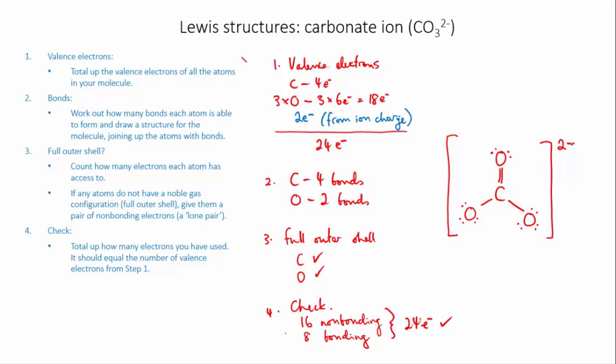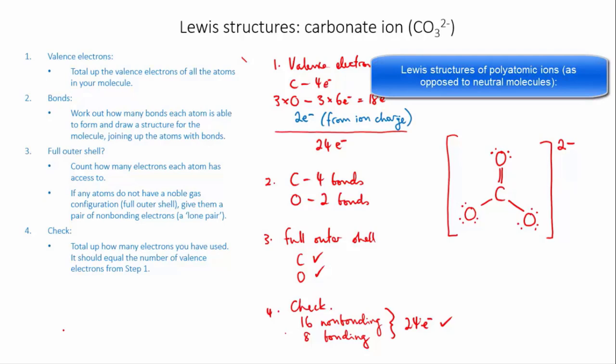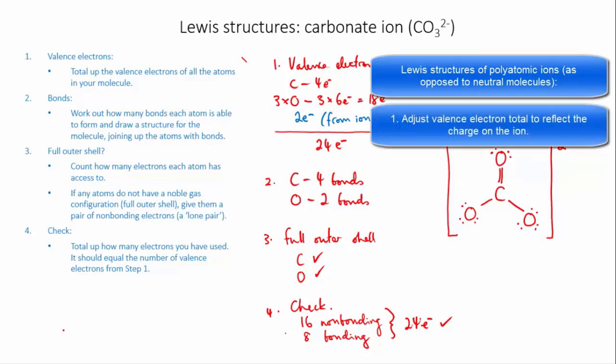So there were actually three things that were different, not one, about drawing this Lewis structure of a polyatomic ion. First, you need to adjust the number of valence electrons to reflect the charge on the ion. If it's a negative ion you'll have to add electrons. If it's a positive ion you'll have to take electrons away.